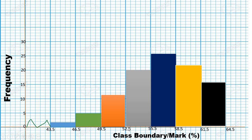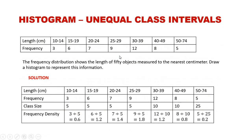Next we move to unequal class intervals. This example shows a frequency distribution of the lengths of 50 objects measured to the nearest centimeter, represented using a histogram. The classes are: 10–14, 15–19, 20–24, 25–29, 30–39, 40–49, and 50–74, each with a given frequency.